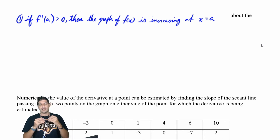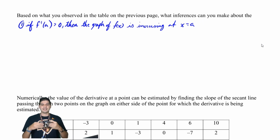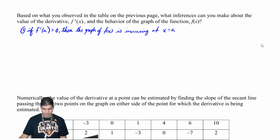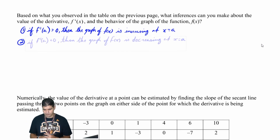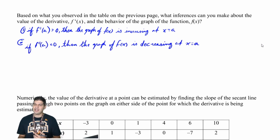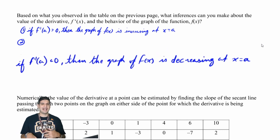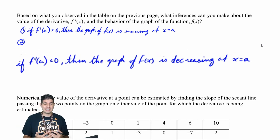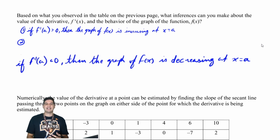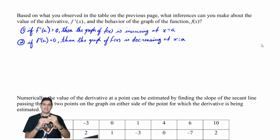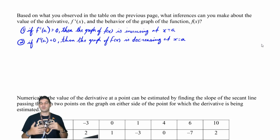The second thing: when f prime of a is less than zero, when the derivative is negative, then the graph of f of x is decreasing at x equals a. We could see those ranges where the graph was decreasing and the derivative was negative the entire time.